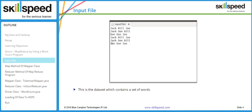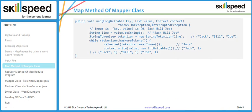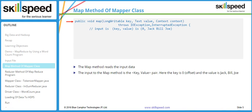Here is a sample MapReduce program executing the map method. Arrow number one shows the map method, which reads input data line by line, represented by the value parameter. The input to the map method is a key-value pair — the key is 0 and the value is 'Jack Bill Joe', because the framework has already calculated the key-value pair.